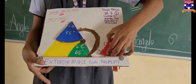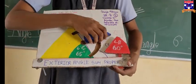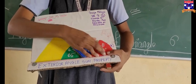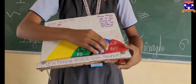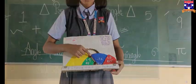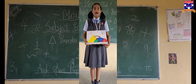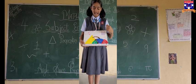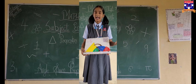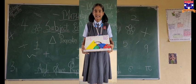The first angle is 60 degrees and the second angle is 55 degrees. Both together make 115 degrees. We know that the exterior angle property formula is angle A plus angle B, which is equal to the exterior angle.